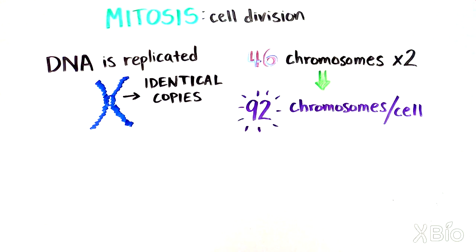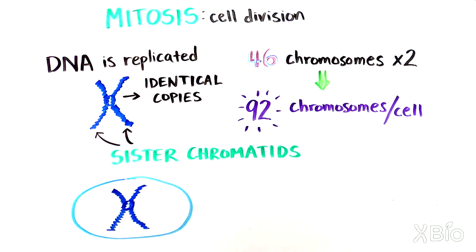The two exact copies of each chromosome are called sister chromatids. Initially, the sister chromatids are connected to each other at a central point, which is often depicted as the X-shaped drawing of a chromosome.